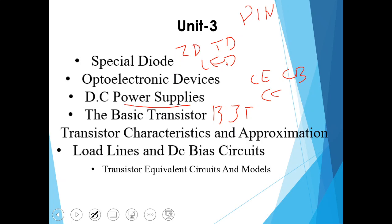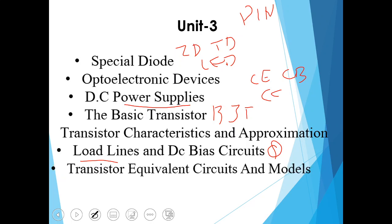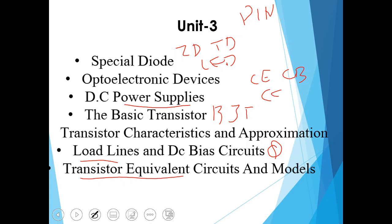Another chapter is load lines and DC bias circuit. Here we'll study DC load line, Q-point, transistor biasing circuits, biasing of a transistor, stability factor, feedback, AC load line. Last chapter in this unit is transistor equivalent circuit and model where we'll study DC and AC equivalent circuit, low frequency model, and H parameters.